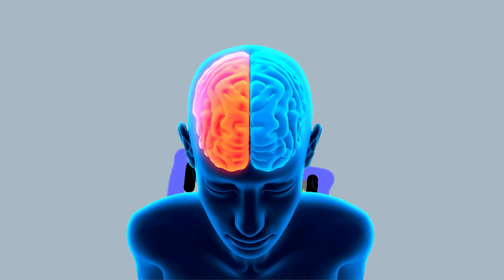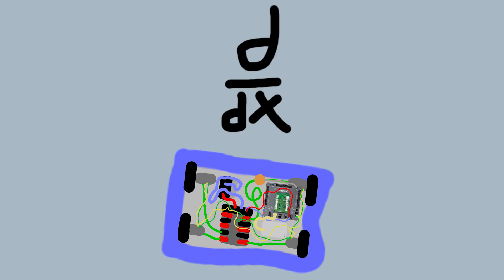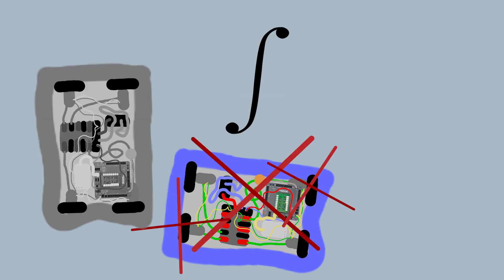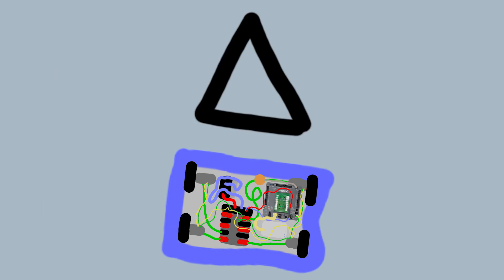However, it is sure where it isn't, within reason, and it knows where it was. It now subtracts where it should be from where it wasn't, or vice versa. And by differentiating this from the algebraic sum of where it shouldn't be and where it was, it is able to obtain the deviation and its variation, which is called error. Let's get started.